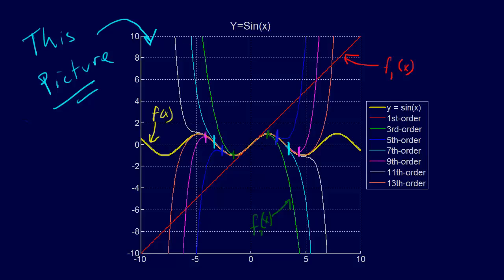It shows that as we get additional terms, farther and farther — remember this is A right here, this is our A. We could have expanded about this point, and all that would have done is shifted all these approximations; they would have started at this point, but we still would have had all of our approximations and expanded them out at any point. This is just this sine shifted over, and all the derivatives are the same — we could have started at any point A. We just chose to start at A equals 0 in this case.